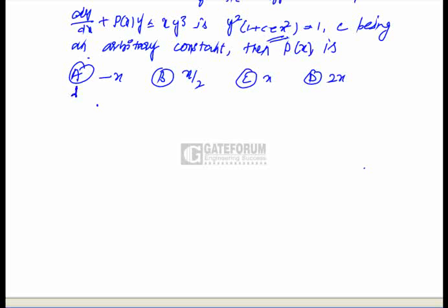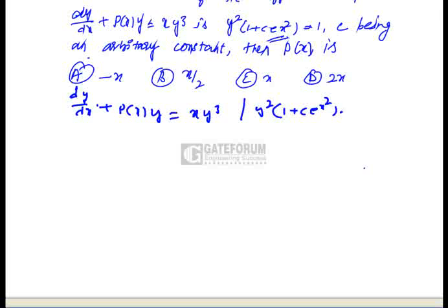The given differential equation is dy/dx + p(x)·y = xy³, and its solution is y²(1 + c·e^(x²)) = 1. We need to find p(x). To do so, we first convert the differential equation into a first-order equation by dividing through by y³.